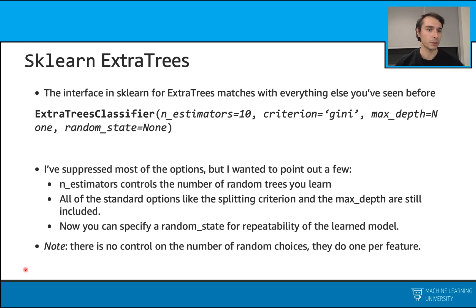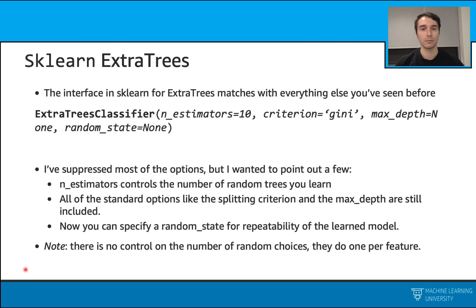A quick note: sklearn implements this slightly differently than what we've seen. We don't have control over the number of random choices, because there is just one per feature with this library.